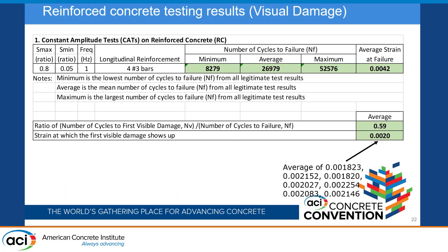We also used that method to identify where visual damage occurs, finding it appears around the yield strain of the reinforcement. This is an important finding. We want to continue this work, including using X-ray imaging to observe internal damage and when it occurs, which can be used for monitoring purposes.